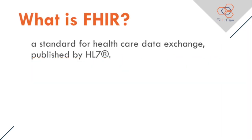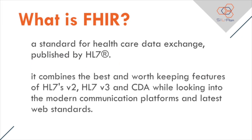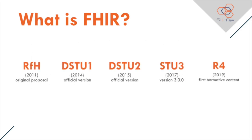FHIR is a standard for healthcare data exchange published by HL7. It combines the best and worth-keeping features of HL7's V2, HL7 V3, and CDA, while looking into the modern communication platforms and latest web standards. A quick overview on the version history of FHIR: it started with the original proposal name RFH in 2011. Then followed with a couple of DSTU publications — Draft Standard for Trial Use — where implementers and specifiers test it and give feedback iteratively. Recently, they released the first normative version of the standard, which is called R4, though only the basic technology and some common resources are already normative; the others will still be in the development process.